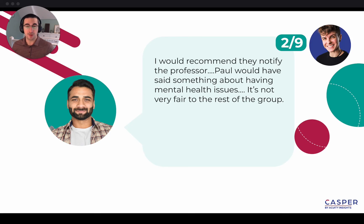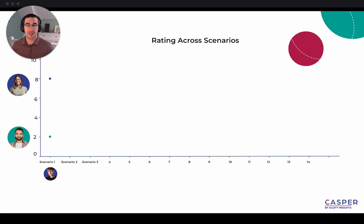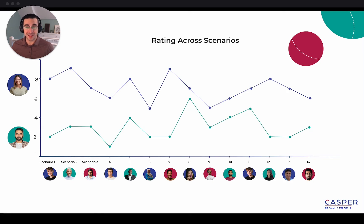May then goes on to rate hundreds of other responses for the same scenario. This is the process for just one of 14 scenarios — the second scenario is rated by a different rater, and so on, until by the end, Lucy and Jim will have navigated 14 different situations and communicated their decisions and rationale to 14 different raters.